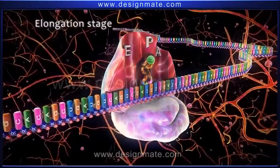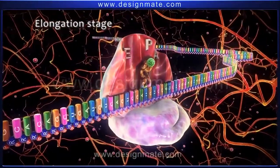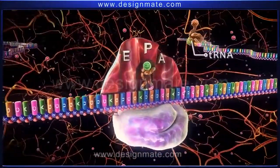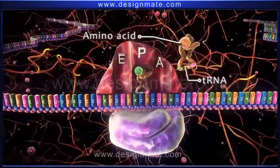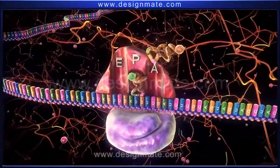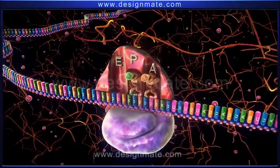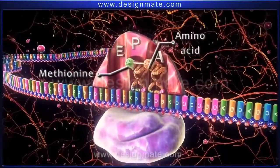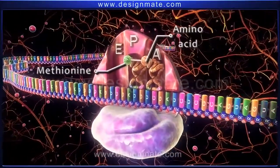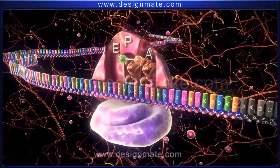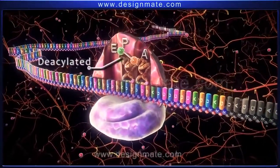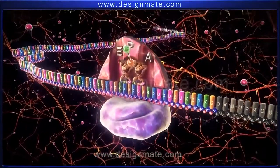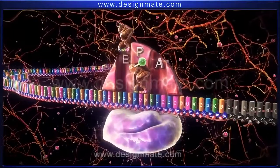This is followed by the elongation stage. During this stage, another tRNA-carrying molecule of an amino acid approaches the mRNA-ribosome complex and fits in the A site. Then a bond is formed between methionine and the amino acid molecule on the tRNA. As a result, met-tRNA becomes deacylated. The ribosome then advances a distance of one codon and the deacylated tRNA shifts to the E site, from where it dissociates.